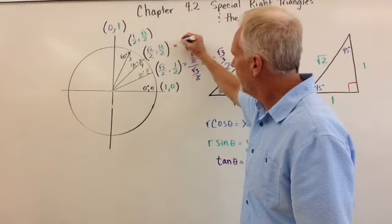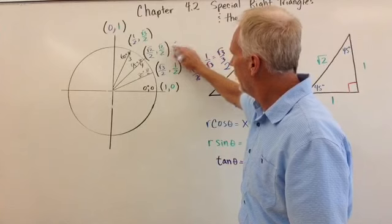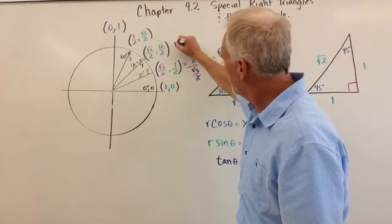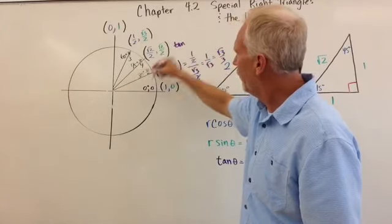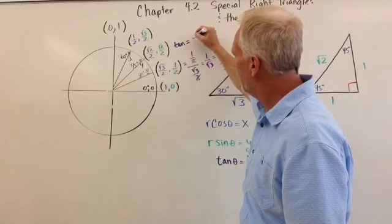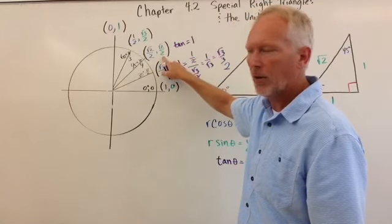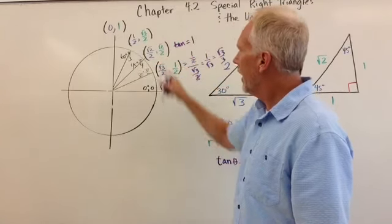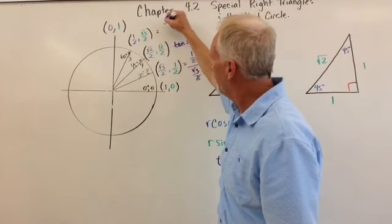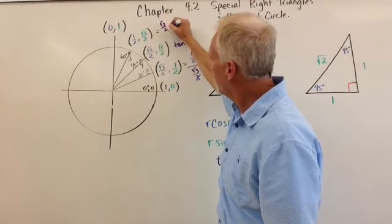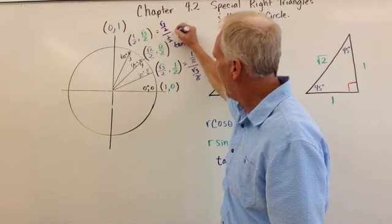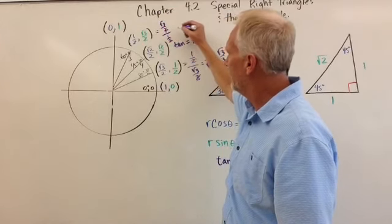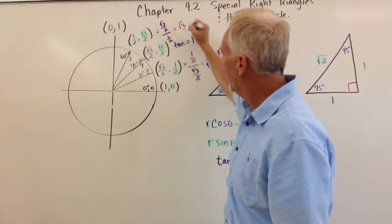The tangent here, tangent of 45 degrees is equal to 1. Square root of 2 over square root of 2 is just 1. And the tangent here is root 3 over 2 divided by 1 half. And those two 2's will cancel, and so we get root 3.